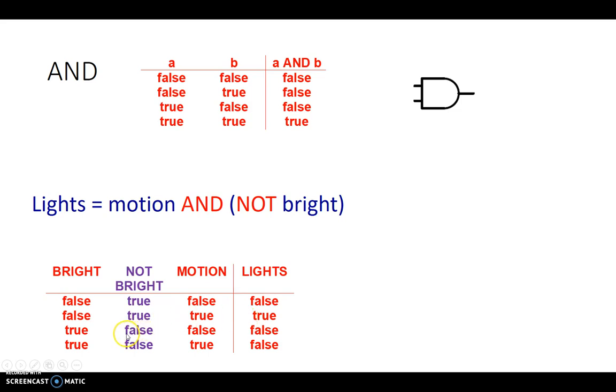Third line. BRIGHTNESS is TRUE, that means it's BRIGHT outside. NOT BRIGHT is FALSE, that means it's STILL BRIGHT outside, and there's no movement. So it's BRIGHT outside and there's no movement, so there's no need for the light to be turned on.